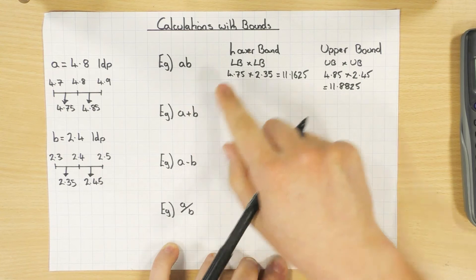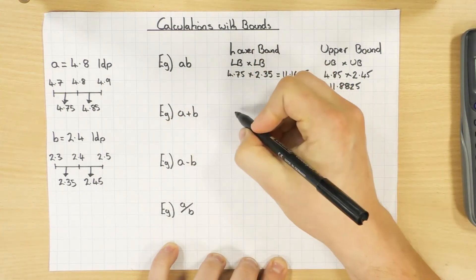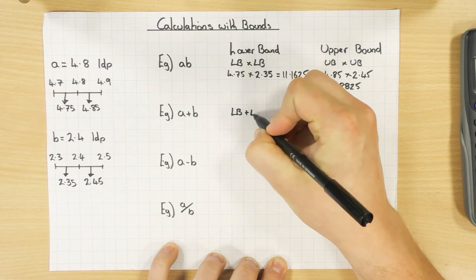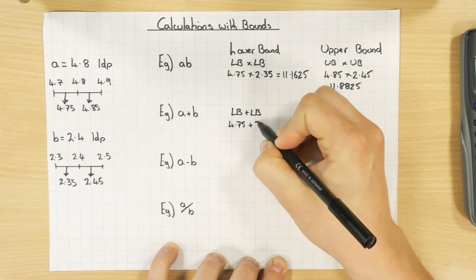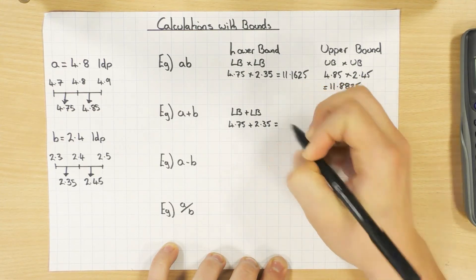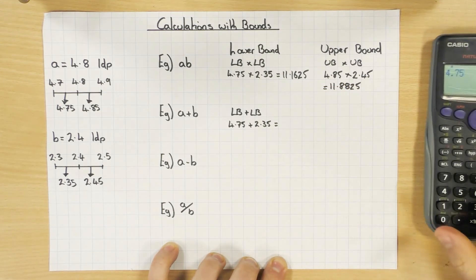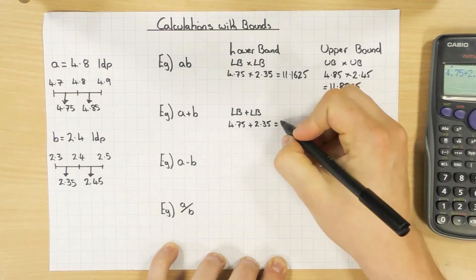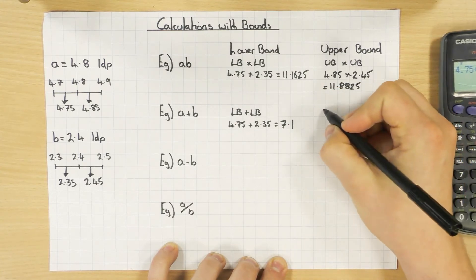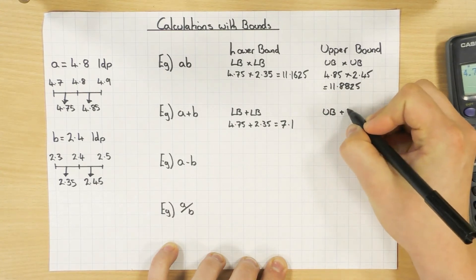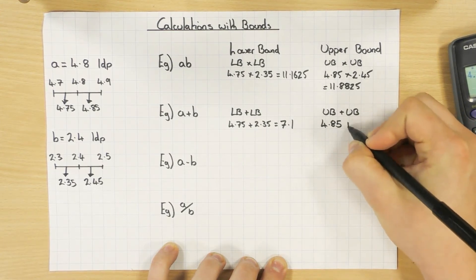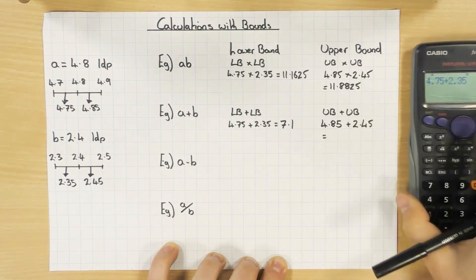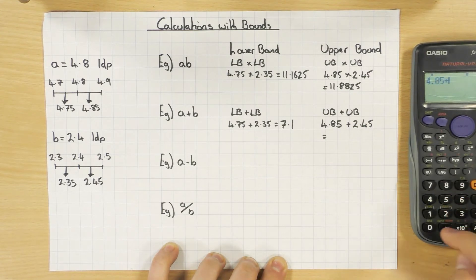For addition, just as expected: the lower bound of a + b is lower bound plus lower bound — 4.75 + 2.35 = 7.1. The upper bound is upper bound plus upper bound — 4.85 + 2.45 = 7.3.